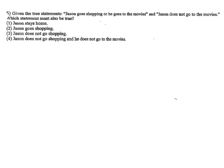Let's look at number 5. Given the true statement: 'Jason goes shopping or he goes to the movies,' and 'Jason does not go to movies.' Since Jason does not go to the movies, that part must be false. The connecting word is OR, so false OR what becomes true? The second part has to be true, because you need at least one true for the entire statement to be true. Therefore, 'Jason goes shopping' must also be true — choice 2.